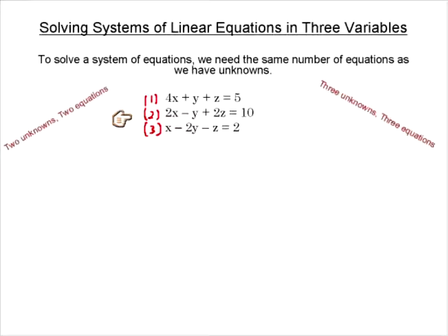I just chose that one. So let's take that equation and solve it for y — let's try to do this in one step. Y is going to equal: if we move y to the other side and move 10 to the other side, our 2x doesn't change. So y = 2x + 2z − 10. If you can't do that in one step, two steps is fine, but we want to get in the habit of doing it in one step. So we're going to take this equation and substitute it into the other two.